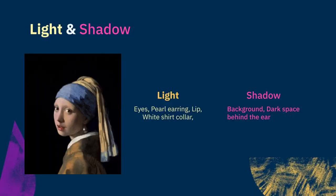In the painting, the artist uses the sparkling pearl earring to connect scattered areas, such as the girl's bright eyes, delicate lips, white shirt collar, and the dark space behind the ear, forming a vivid whole.